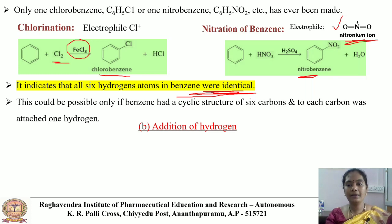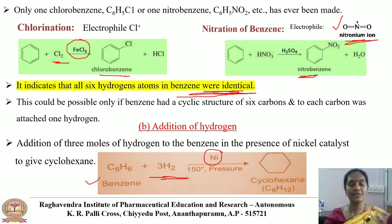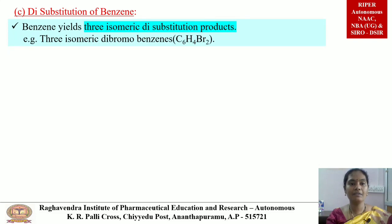Next, coming to the addition of hydrogen: addition of three moles of hydrogen to benzene in the presence of nickel as a catalyst gives cyclohexane. Benzene reacts with three moles of hydrogen in the presence of nickel to give cyclohexane. With this evidence, we can say that benzene has a cyclic structure.